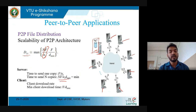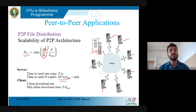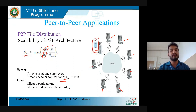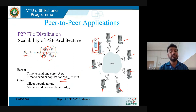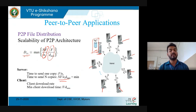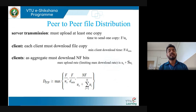The client downloading rate in client-server is: D_cs ≥ max(N*F / U_s, F / D_min). Time to send one copy equals F/U_s, and time to send N copies equals N*F/U_s. The minimum client download time is F/D_min. So the performance metric for client-server file distribution is: D_cs ≥ max(N*F/U_s, F/D_min).